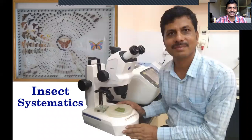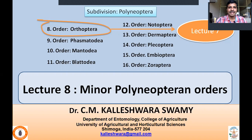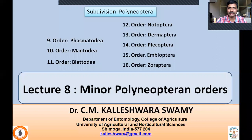Welcome back to the Insect Systematics lecture series. We will continue our discussion on the general characters of orders and economically important families. Since the previous class, we were discussing order-level characters and important families of subdivision Polyneoptera. We completed the discussion on Orthoptera and its economically important families in lecture number 7, so we are left with the remaining Polyneoptera orders. Most of them are minor — fewer species have been described and they are not economically important in terms of agriculture, medicine, and veterinary sciences.